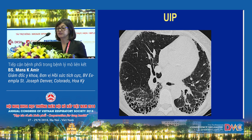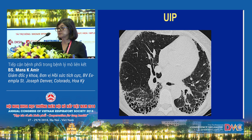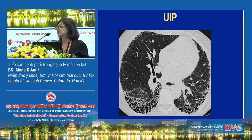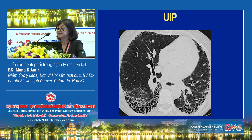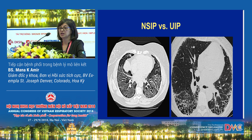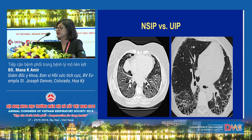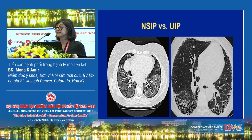In comparison, this slide shows usual interstitial pneumonitis — a fibrotic lung disease that oftentimes progresses to end-stage fibrotic lung. There is a significant amount of lower-lobe honeycombing and subpleural fibrosis with traction bronchiectasis. Comparing the two: on the left side we have NSIP, on the right side UIP. UIP is more predominant at the bases; NSIP occurs in all areas of the lung. NSIP is more inflammatory; UIP is more fibrotic.